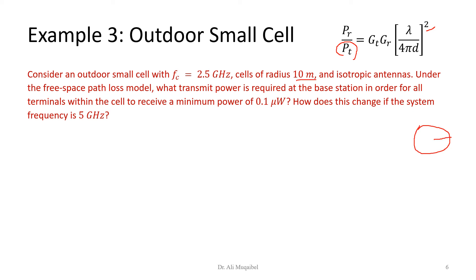What transmit power P_t is required at the base station in order for all terminals within the cell to receive a minimum power of 0.1 μW? We are given an area with radius of 10 meters, and we want to make sure that people at the edge will receive at least 0.1 microwatt. We have just one main equation to play with. We'll solve for P_t: it equals P_r, and we just rearrange the equation. We divide and get G_t G_r inside the bracket with the square root. Everything is known: we want P_r to be a minimum of 0.1 microwatt, we have the distance at the edge, and we have also the gain of the antenna.